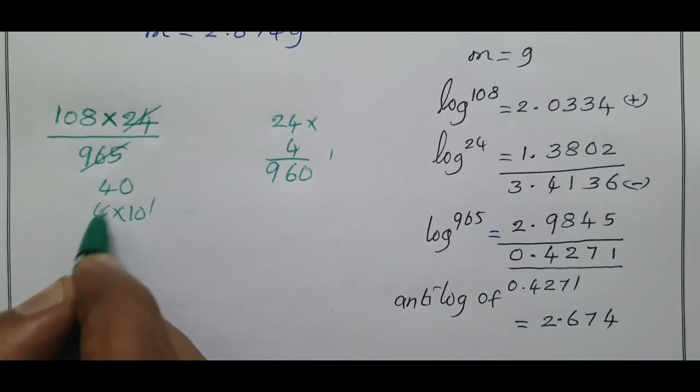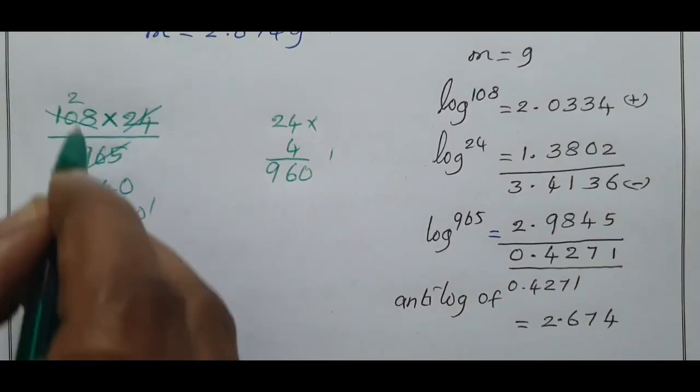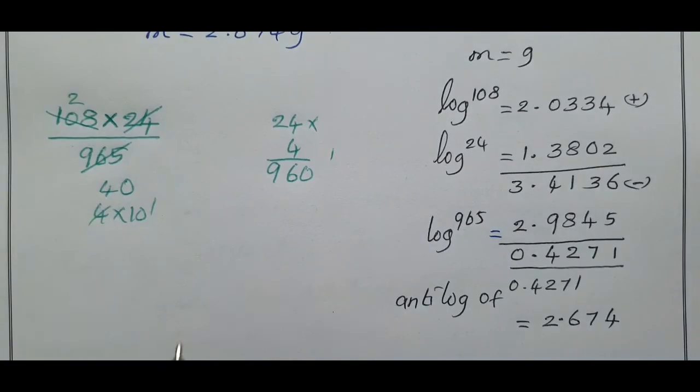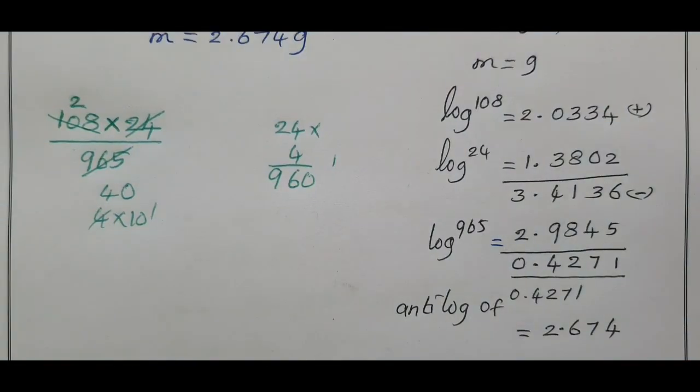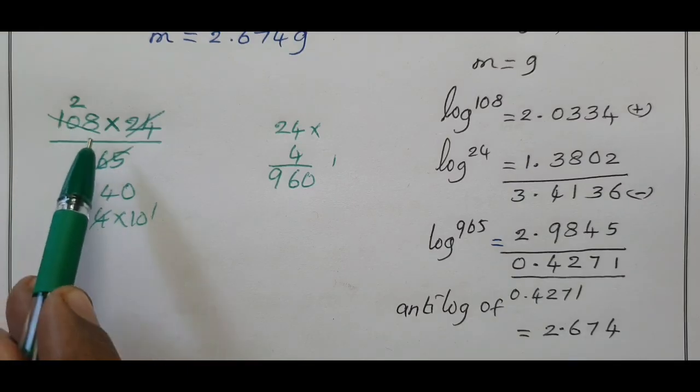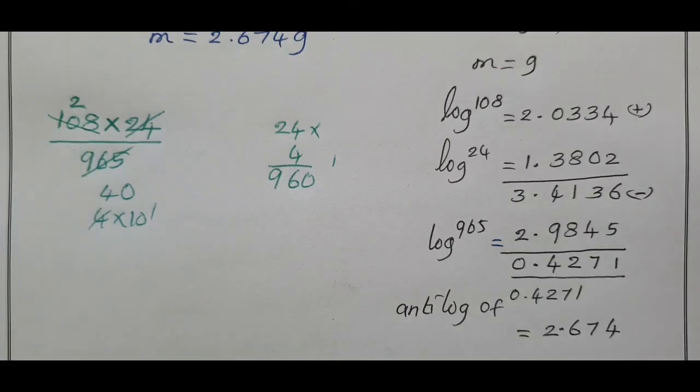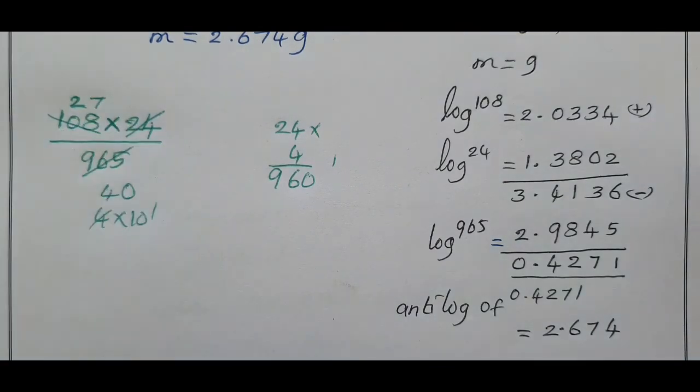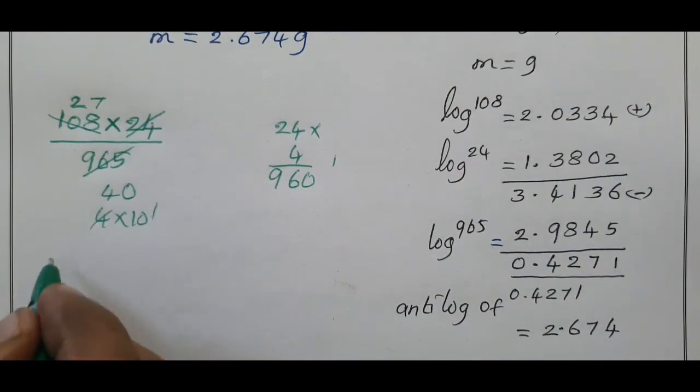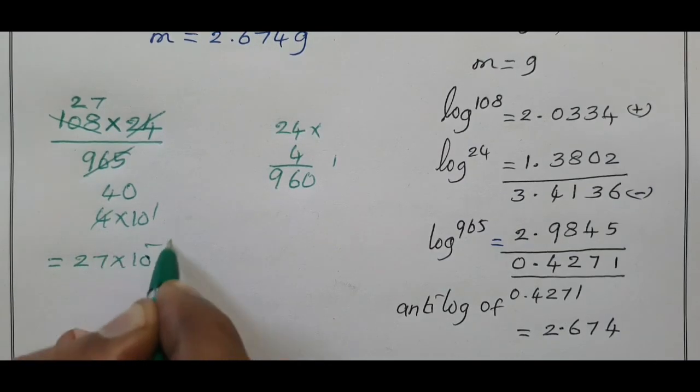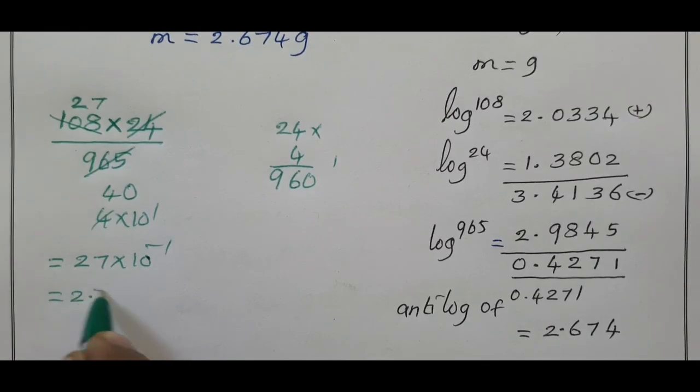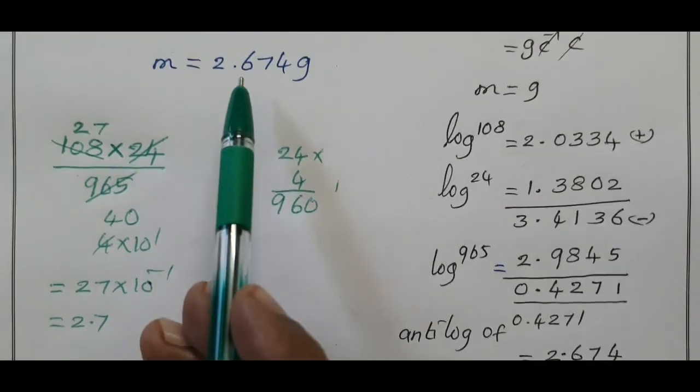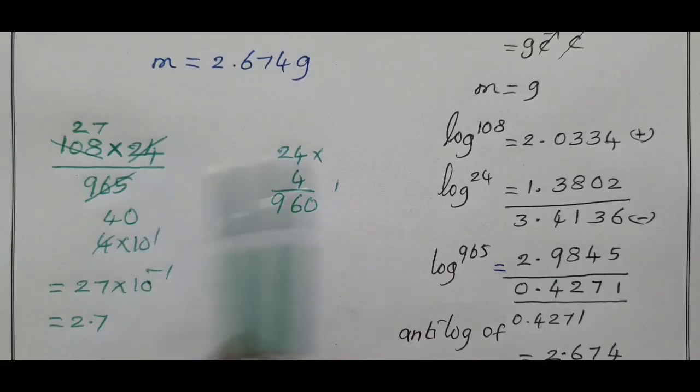40 means 4 times 10^1. 27 times 10^(-1) equals 2.7. This value can also be written as 2.7. This is a simpler method.